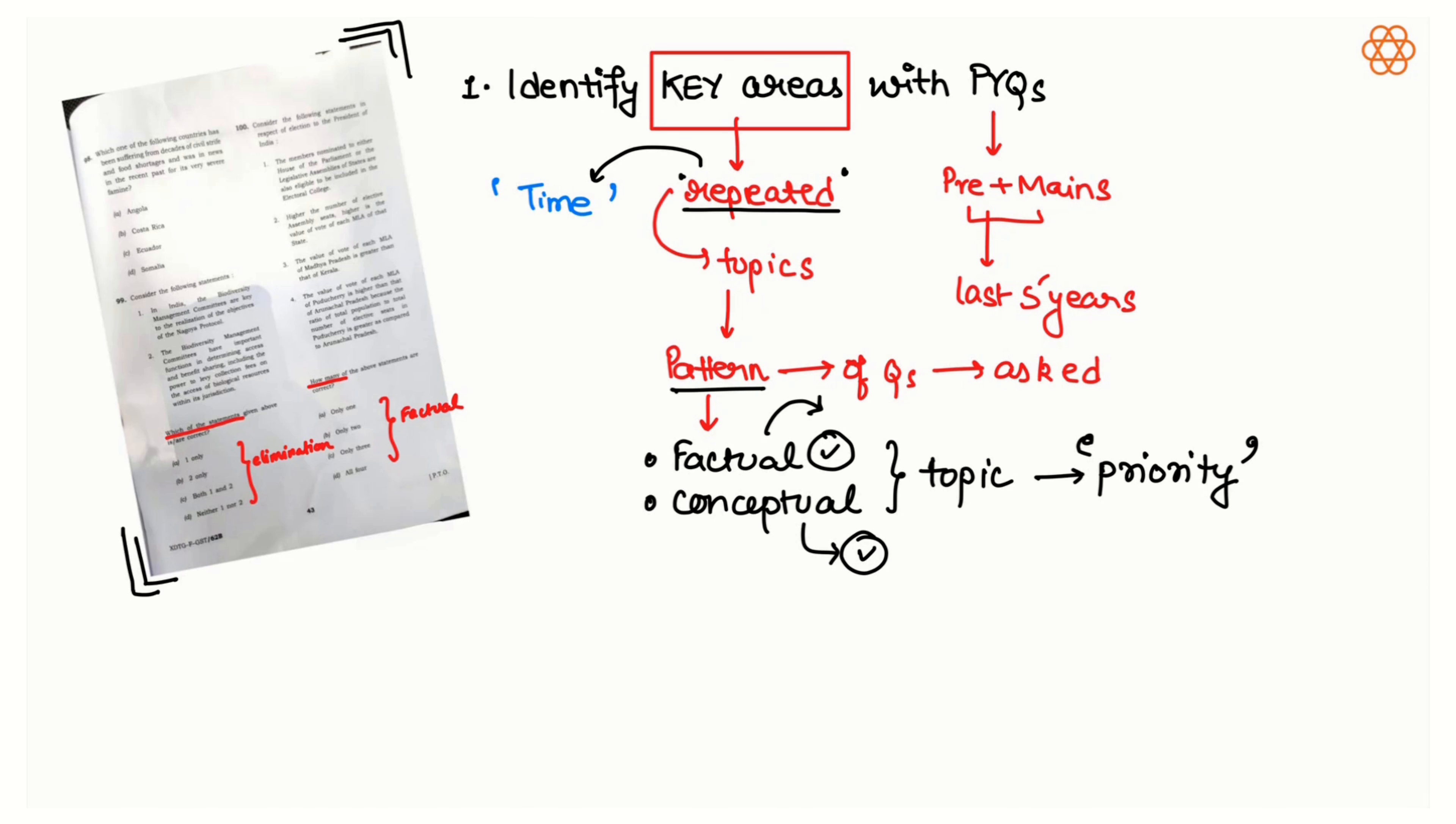If you understand which area in geography is being repeatedly asked, you need to prioritize that topic and give it importance over the other topics. That is the first advantage of identifying the key areas with previous year questions. That is why I am again in favor of asking all of you to practice PYQs. Now you can even practice previous year questions with the help of Super Kalam. Simply go to Super Kalam and ask for five previous year questions on, let's say, volcanoes, if you have missed this topic or if this topic is in your backlog, and simply you can practice those questions.